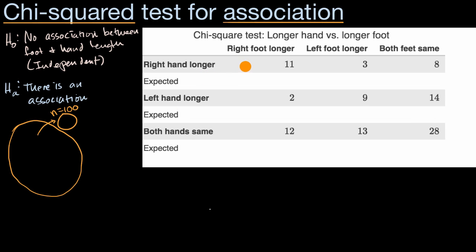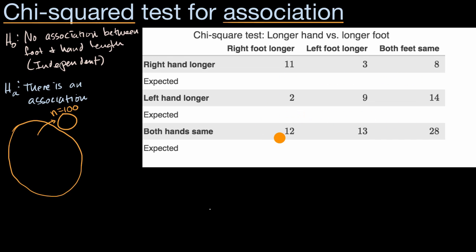11 folks had both their right hand longer and their right foot longer. 3 folks had their right hand longer but their left foot was longer. 8 folks had their right hand longer but both feet were the same. 9 people had their left foot and hand longer, and 2 people had their left hand longer but their right foot was longer. To do our chi-squared test, we need the expected value of each data point assuming the null hypothesis is true — no association between foot and hand length.